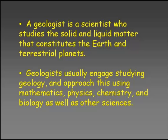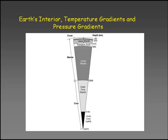So what is a geologist? A geologist is a scientist who studies the solid and liquid matter that constitute the Earth and terrestrial planets. When we speak about planets, there are two kinds: jovial planets and terrestrial planets. Jovial planets are made up of more gaseous materials. Earth is a terrestrial planet. Geologists usually engage with geology using mathematics, chemistry, biology, and other sciences. If you take a cross section, you find earth is divided into a number of layers.